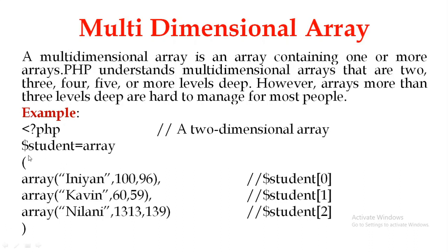What is the example? Student array - we will create one row. First array is row 0 - first row, second row, third row. We are going to create three rows. First row is one set of values, second row is a set of values, third row is a set of values. Student number 0 means first student. So Cavin is the second student and Nilani is the third student.